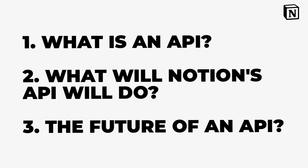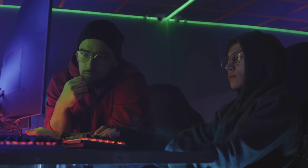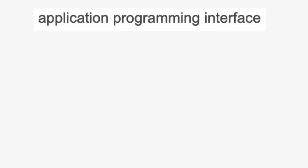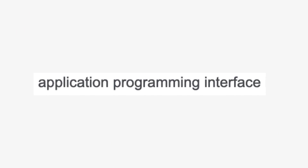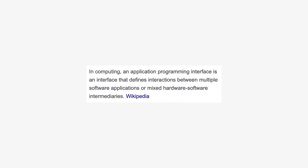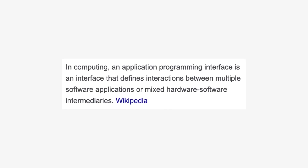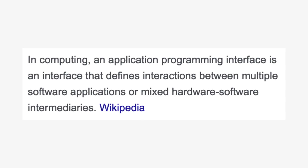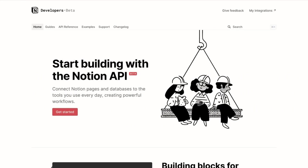Let's start with API. For those folks out there who might not know what an API is — I actually didn't know what it stood for — it stands for Application Programming Interface. Essentially, this means an interface that defines interactions between multiple software applications, basically the relationships between Notion and other apps.